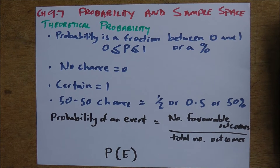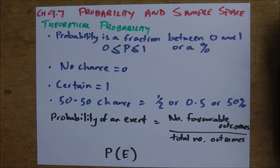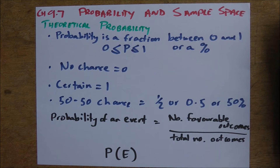Even something like when you get insurance to insure your car, your house, or your contents — those are basically probabilities that those companies have worked out. They then calculate the premium that you pay for that insurance based on those probabilities. It's all based in this sort of math that we're looking at here.